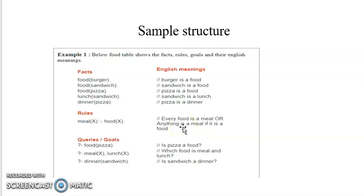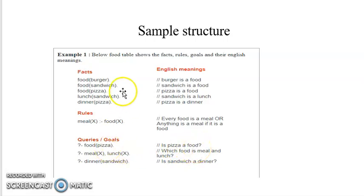These are the goals — the queries — the questions we provide to our knowledge base to make decisions. For example, I may provide a query: 'food(pizza)' — is pizza a food? The machine will say that's true, because pizza is a food. In this way we can define a knowledge base in general.